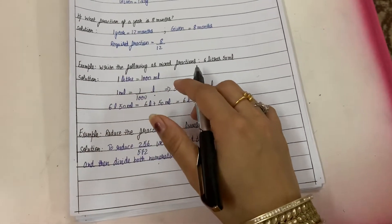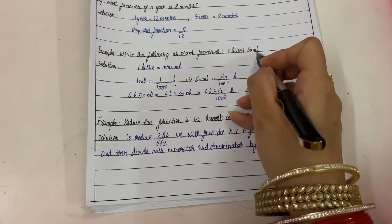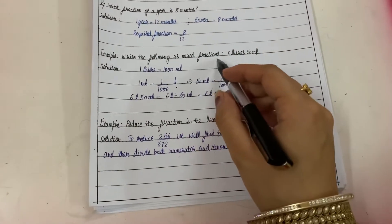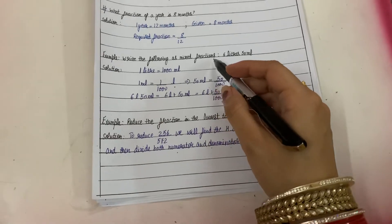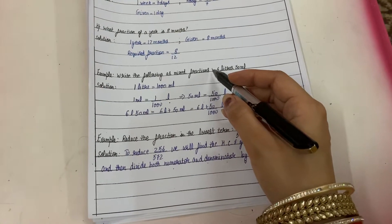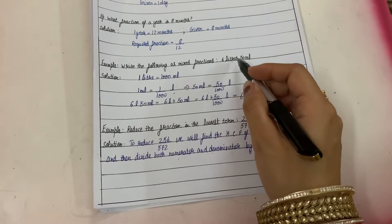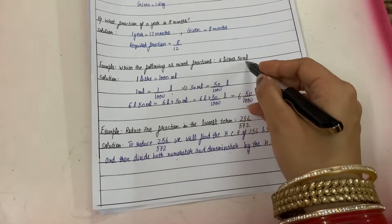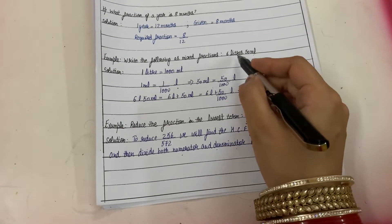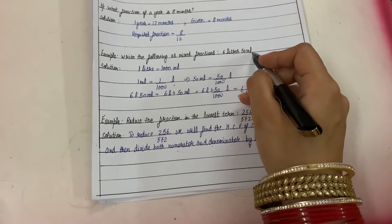Next example: write the following as mixed fractions. Mixed fractions are those fractions which contain both a fractional part and a whole number part. We are given six liters fifty milliliters and we need to write it in the form of a mixed fraction. First, we will find the relation between liters and milliliters.